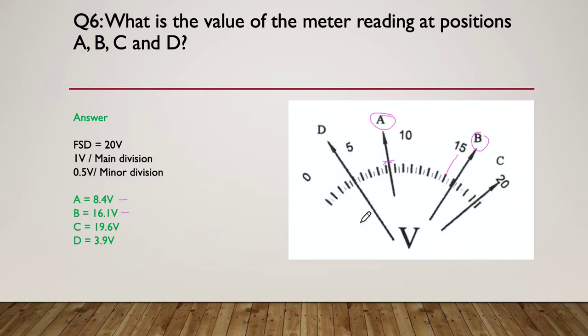Position C right up the top end of the scale here, not quite 20 volts, just a little bit under it. I said oh, it's not a bit more than half so I went with 19.6. If you went 19.5 or 19.7 it doesn't matter.